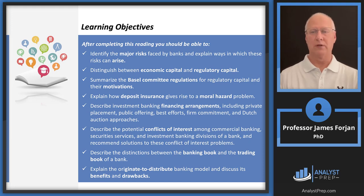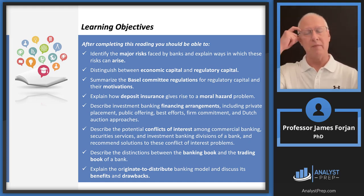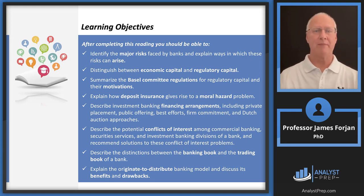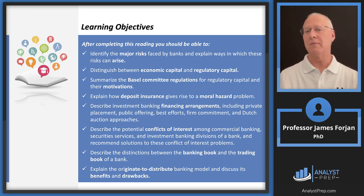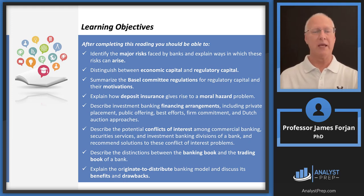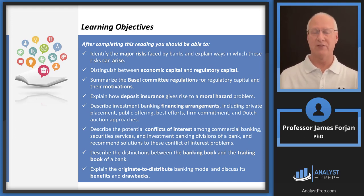So what are some important kinds of definitions and topics here? We'll talk about the difference between economic and regulatory capital — that's one of the questions at the end of the chapter, so make sure you pay attention. We'll talk about governing bodies throughout Parts 1 and 2, moral hazard, financing arrangements, and conflicts of interest. Another question that shows up at the end of the chapter is the banking book and the trading book, and we'll spend a handful of slides on the originate-to-distribute banking model's benefits and drawbacks.